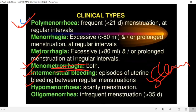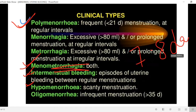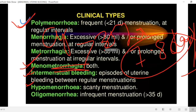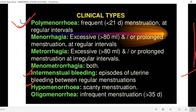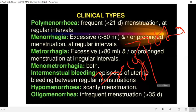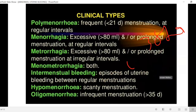In oligomenorrhea, the cycle is infrequent — only 7 to 8 cycles per year — which qualifies as oligomenorrhea.